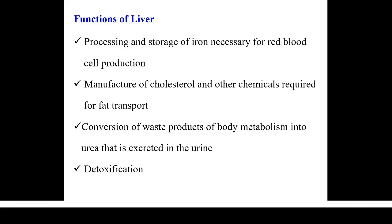Animals are classified based on how they excrete nitrogenous waste: ammonotelic, ureotelic, and uricotelic. Aquatic animals like fish are ammonotelic — they release ammonia directly into the water. Amphibians are also ammonotelic. Birds and reptiles are uricotelic and excrete uric acid, which is white. We humans are ureotelic animals. In public toilets, you may notice a smell because urea in urine is converted to ammonia in the atmosphere. The conversion of ammonia to urea occurs in the liver, which is a key function.